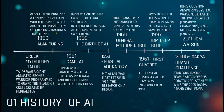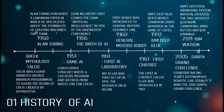In 1960, the first robot was introduced to General Motors' assembly line. In 1961, the first AI chatbot called ELIZA was introduced. In 1997, IBM's Deep Blue beat the World Chess Champion, Kasparov, in the game of chess.